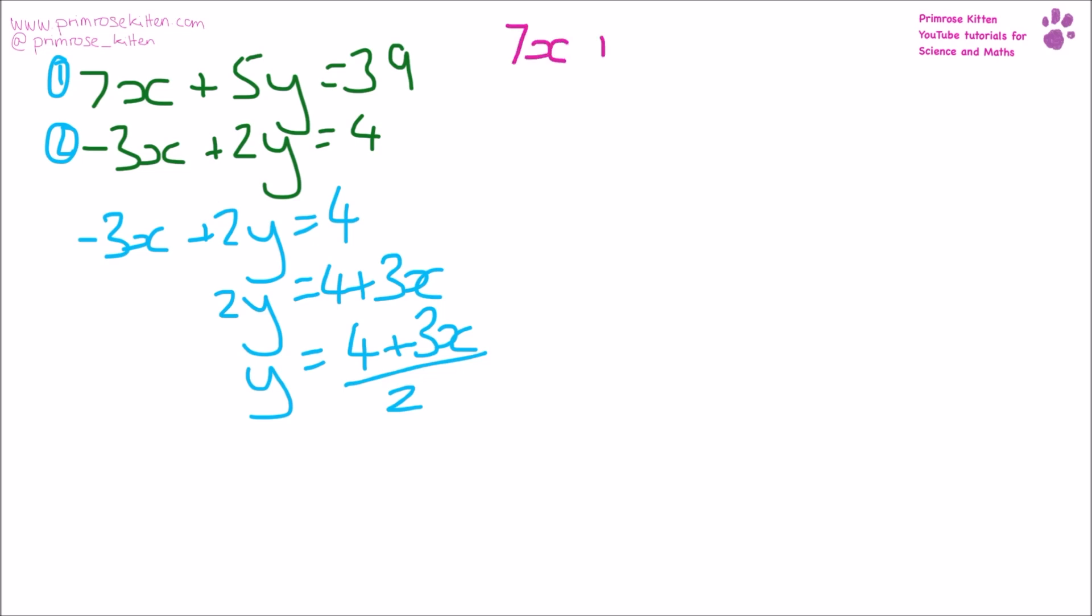So 7x plus 5 times 4 plus 3x over 2 equals 39. Then I'm going to sort that all out.